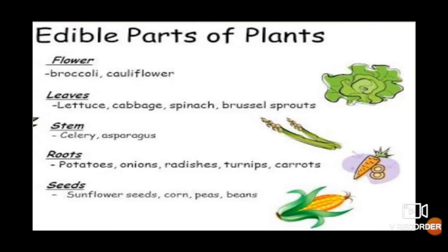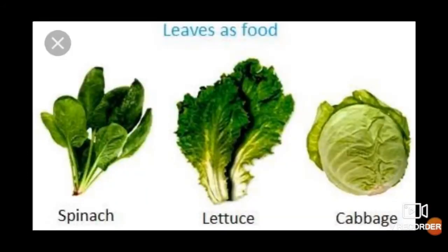We eat certain parts of different plants as food. They are known as edible parts. Let us find out more about some edible plant parts. Some plants store food in the form of starch in their leaves. Spinach, mint, mustard and cabbage are edible leaves.